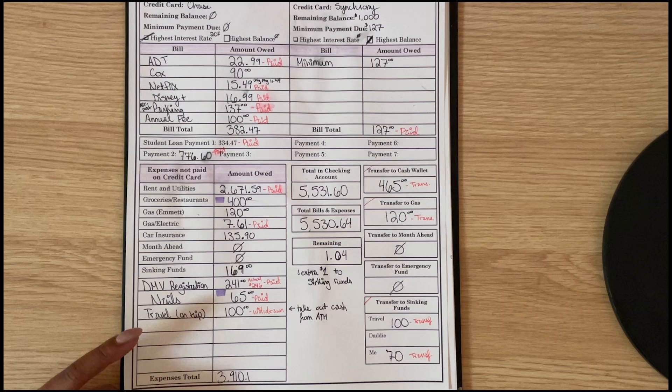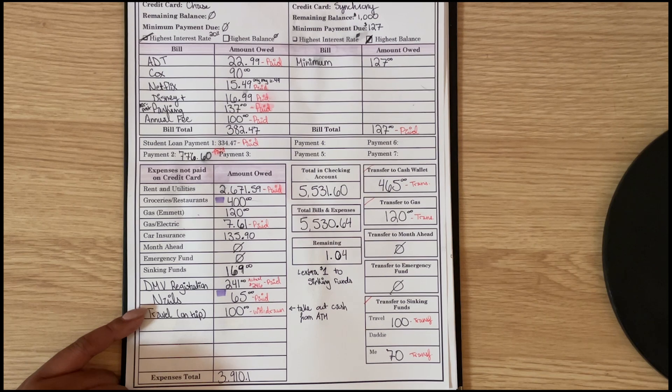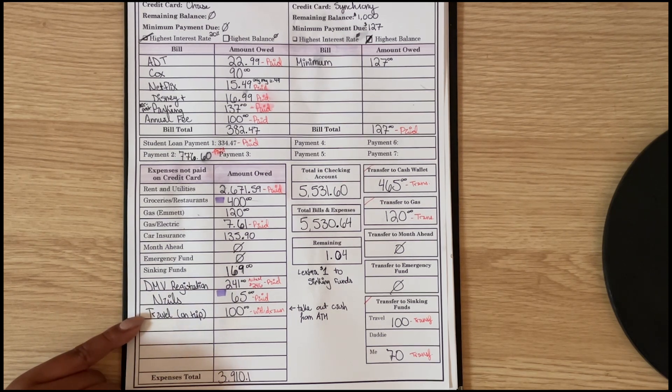My nails - I am not going to get a pedicure this month, but I am going to just get a color change, so that obviously will not be as expensive as a full pedicure. So $65 for nails. On my trip I am withdrawing $100 in cash out of the ATM because I never travel without having cash.